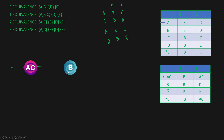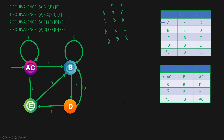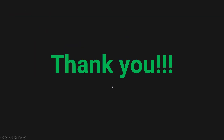Based on this new transition table we draw our minimized DFA. Starting state AC: input 0 goes to B, input 1 stays at AC. State B: input 0 loops back to B, input 1 goes to D. State D: input 0 goes to B, input 1 goes to E. State E: input 0 goes to B, input 1 goes to AC. This is how we minimize our DFA. I hope you got this concept — if you have any queries, feel free to ask in the comment section below. Thank you very much.